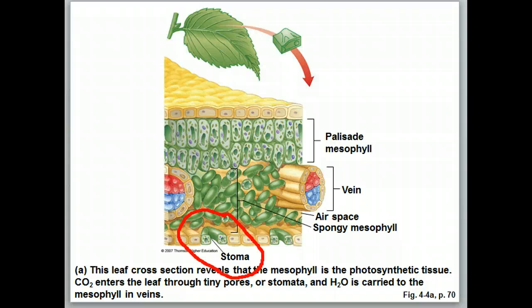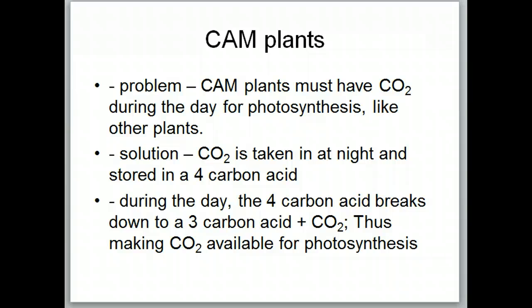With the CAM plants, we reverse that — the stomata are open at night, which greatly reduces water loss. Remember, these CAM plants live in a desert environment. The CAM plants have a problem: they have to have carbon dioxide during the day for photosynthesis, just like any other plant. Daytime is when light is striking the plant and light energy is available, so carbon dioxide is needed then. The solution is that CAM plants take up CO2 at night and store it as a four-carbon acid. Then during the daytime, the four-carbon acid breaks down to a three-carbon acid plus carbon dioxide, making CO2 available for photosynthesis during daylight hours.